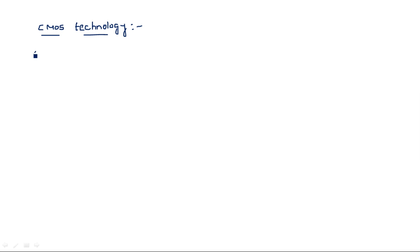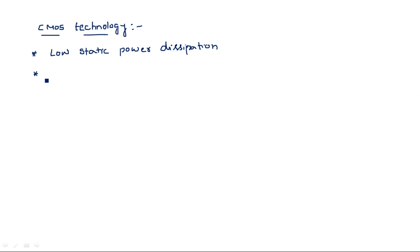First, let us look at the important features of CMOS technology. The power dissipation in CMOS technology is very low — we can say it has low static power dissipation. Also, as MOS technology has high input impedance, the same carries over to CMOS technology, meaning it has very high input impedance.